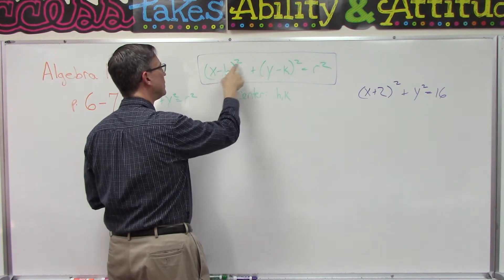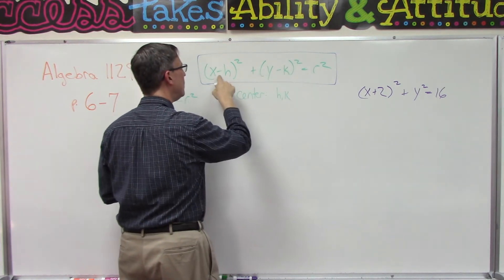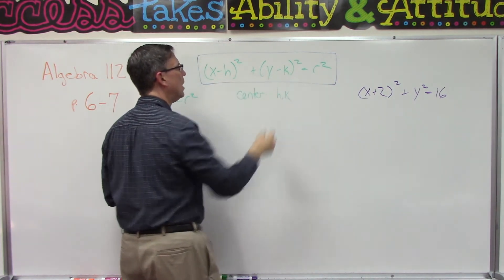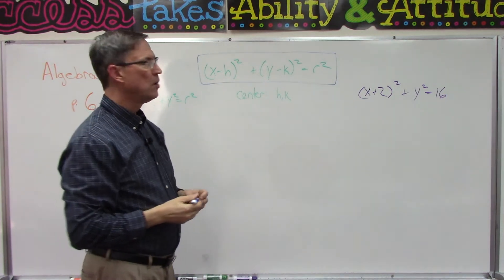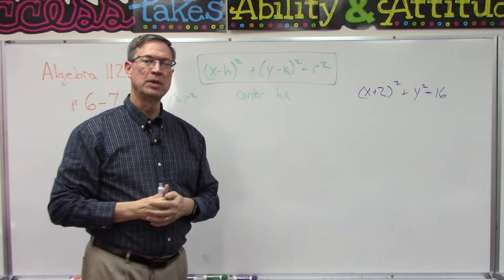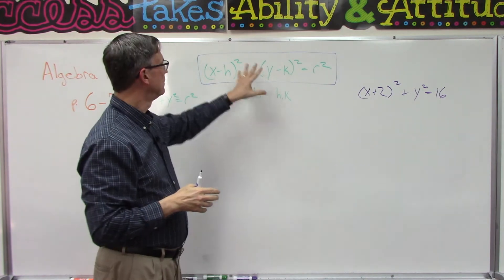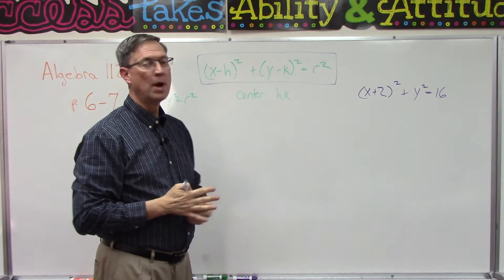This formula though is a little different. We still have an x squared and a y squared, but we have two other numbers. And we can just inspect it, we can just look at it if it's in this form, and we can pull out these two numbers.